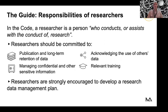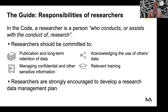Researchers also have responsibilities. They are committed to publishing and retaining their data for quite a long time — long enough according to the funding rules. They are committed to managing confidential and other sensitive information, to acknowledging the use of others' data, and they also have to engage with relevant training when it comes to data management. Very importantly, the code defines a researcher as a person who conducts or assists with the conduct of research — meaning that if you're a specialist in a facility who assists researchers in their experiments, you are also a researcher. And researchers are strongly encouraged to develop a research data management plan.